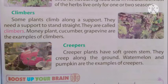Climbers - करेला, कुंदरू, अंगूर ये सब जिनमें लताएँ होती हैं, बेल होती है, ये सब climbers होते हैं। Some plants climb along a support. कुछ पौधे ऐसे होते हैं जिनको खड़े होने के लिए किसी की support की ज़रूरत होती है। They need a support to stand straight, they are called climbers. Money plant, cucumber, grape vine are examples of climbers.